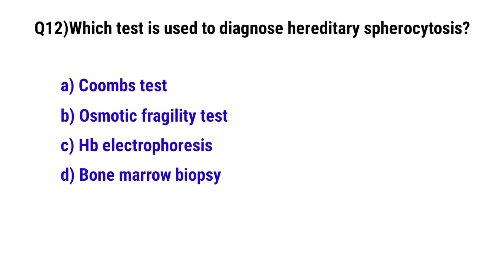Question No. 12. Which test is used to diagnose hereditary spherocytosis? The correct option is B: Osmotic fragility test.